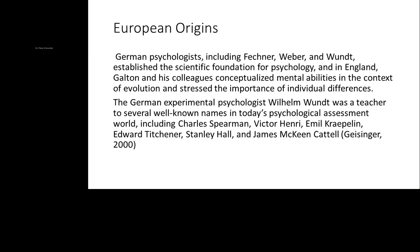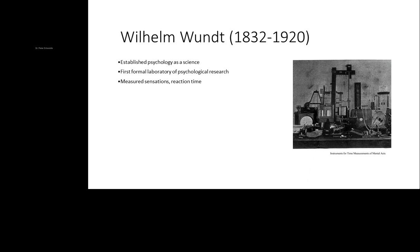In fact, Wundt referred to himself as a psychologist. Meanwhile, in England, Galton and his colleagues had conceptualized mental abilities in the context of evolution and looked at the importance of individual differences. That German experimental psychologist Wilhelm Wundt was a teacher to many famous figures in psychology and assessment, including Charles Spearman, Victor Henry from France, Emil Kraepelin from Germany, along with Americans Edward Titchener, Stanley Hall, and James McKeen Cattell. He was really quite influential in terms of the students who came to his lab.